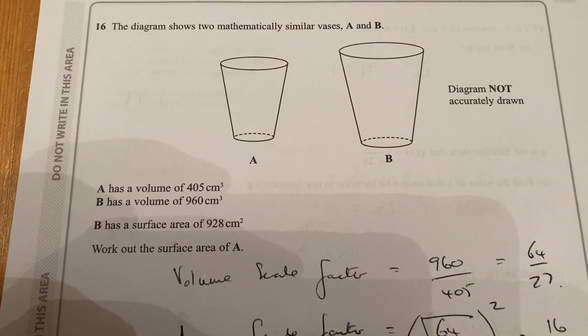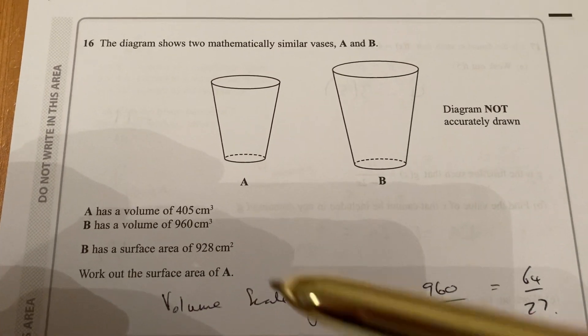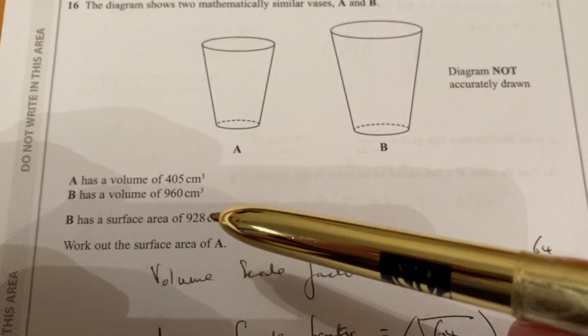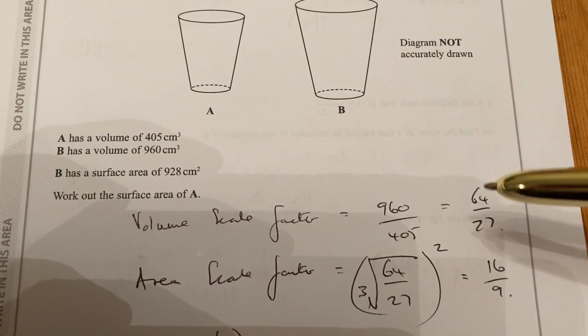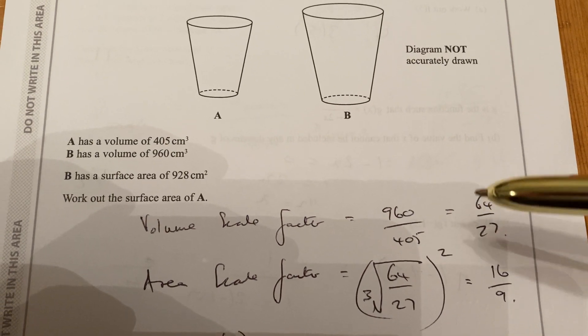Question number 16. The volumes - we've got the two volumes there. I can find the volume scale factor by dividing the big one by the small one, gives me 64 over 27 when you cancel it down.